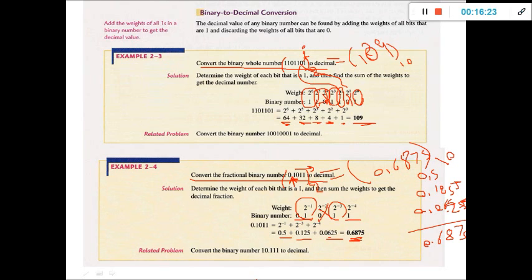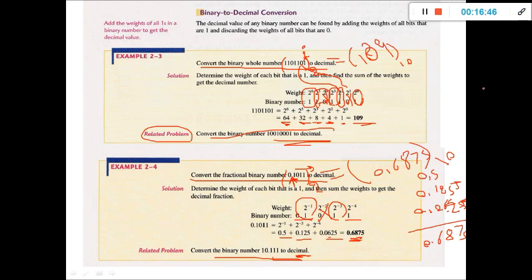Now try to solve related problems: convert the given number to decimal, and convert the binary number — which has both a positive integer part and a negative fractional part — to decimal. If you have any questions, I will answer them in the online session. Thank you.